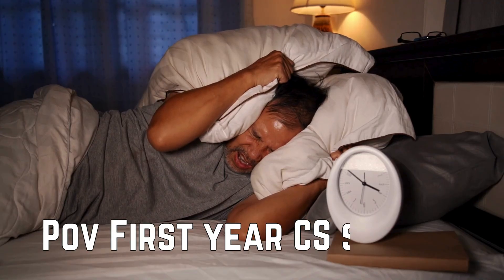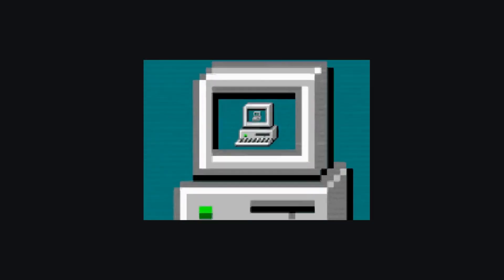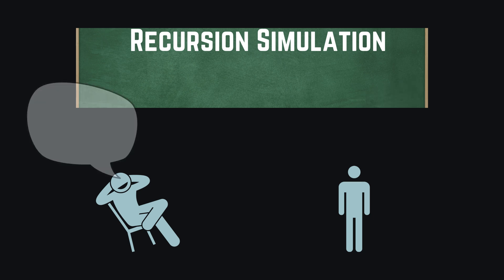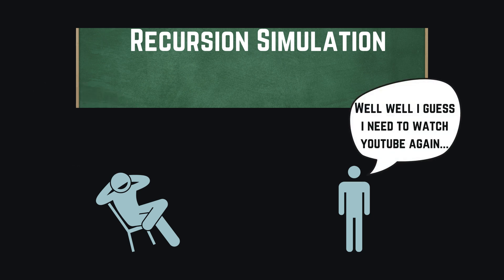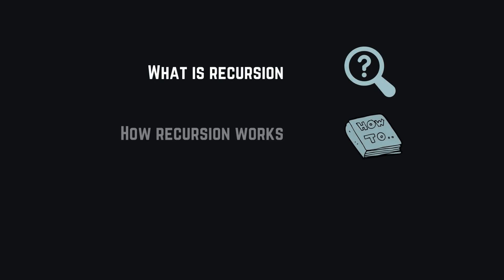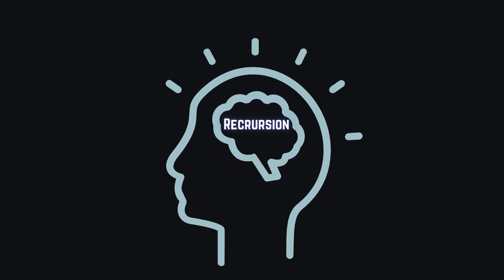Recursion — another topic that keeps freshly enrolled CS students awake at night, because they have a really hard time understanding why the program runs in this unintuitive way when a function calls itself. It doesn't get any better when your professor is too lazy to provide a detailed hand simulation of how the recursive calls are processed step by step. That's why we're going to cover in this video what recursion is, how it works, and two examples that will be hand simulated for a deep understanding of recursion. So stay tuned.